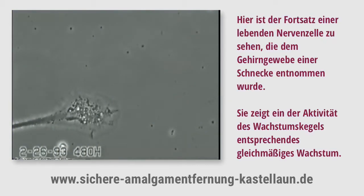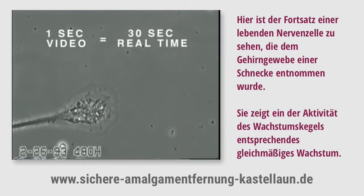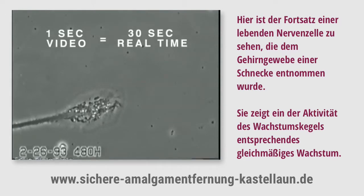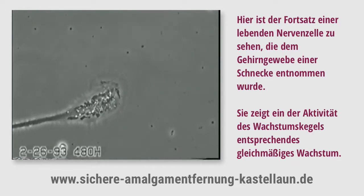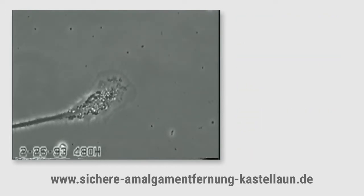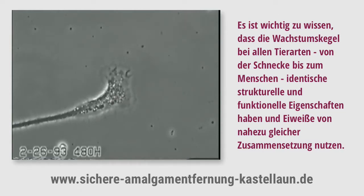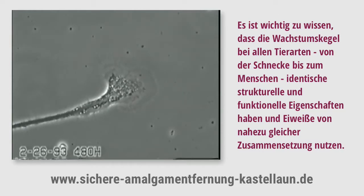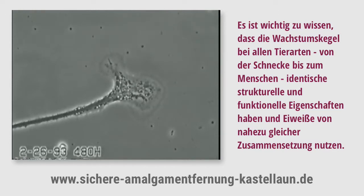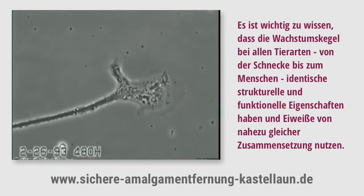Shown here is the neurite of a live neuron isolated from snail brain tissue, displaying linear growth due to growth cone activity. It is important to note that growth cones in all animal species, ranging from snails to humans, have identical structural and behavioral characteristics and use proteins of virtually identical composition.